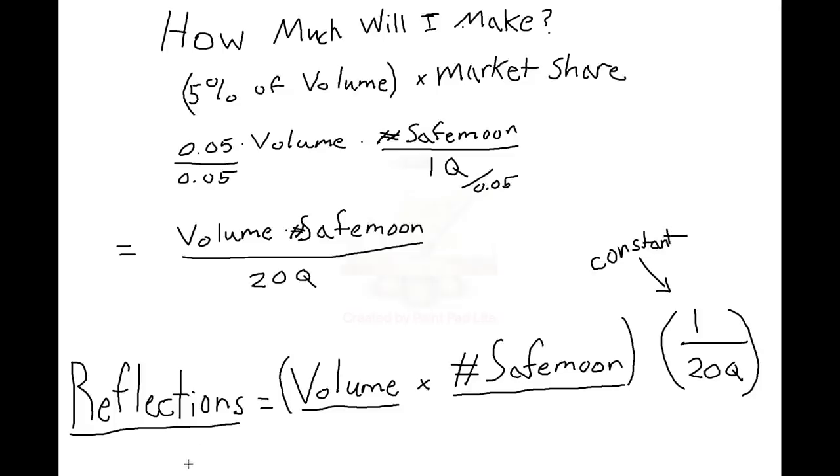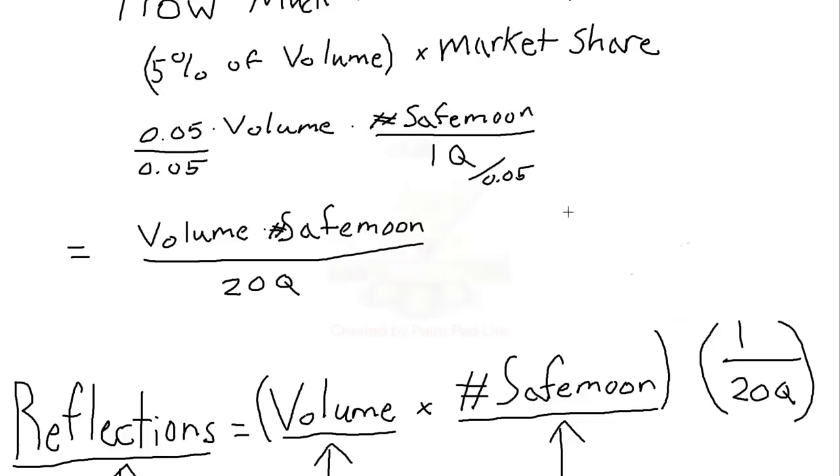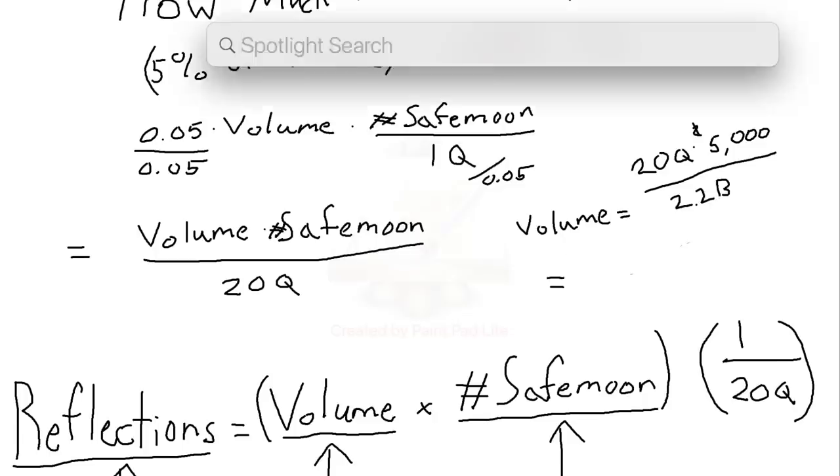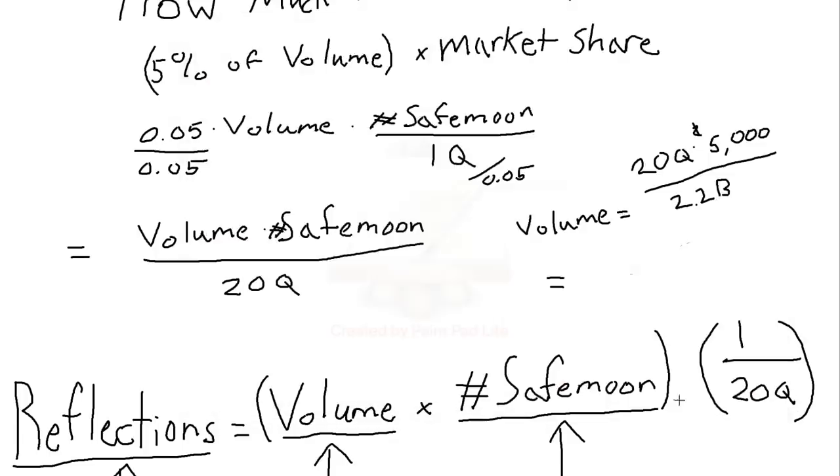By rewriting the denominator, we can see that reflections is nothing more than volume times SafeMoon multiplied by a constant, 1 over 20 quadrillion. That part doesn't change. But what's beautiful about this is it tells us exactly what we need to know. It shows the direct linear relationship between reflections, volume, and SafeMoon. If either volume or your SafeMoon bag increases, reflections do too, linearly. To calculate, for instance, how much volume do I need to make X thousand dollars in reflections, just do some algebra. Isolate volume, substitute in however many thousand dollars you want for reflections, and solve for volume.